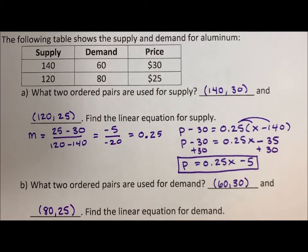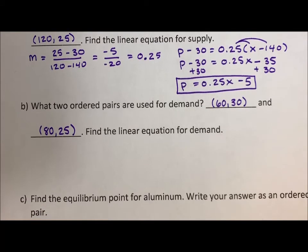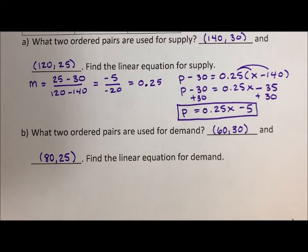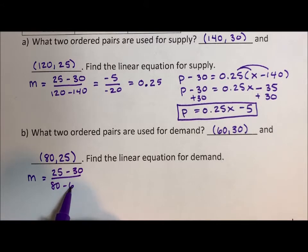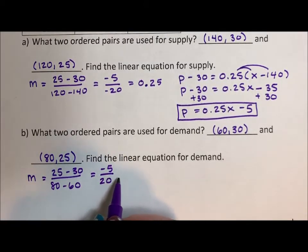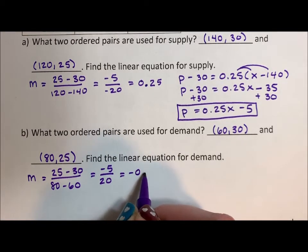Find the linear equation for demand. So I'm going to scooch this up. We don't really need the table now that we have all our ordered pairs. So if I leave it about here, we can still see the ordered pairs. I don't know if we really need them, but we'll see. So again, we'll find the slope. So 25 minus 30 over 80 minus 60 is negative 5 over 20, which is again going to be 0.25, but in this case, it's going to be negative 0.25.